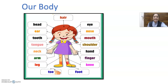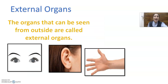Hum inki head se bohat saray kaam karte hai. So children, in this picture you can see so many organs of our body. The organs or body parts which can be seen from outside are called external organs. Body parts which we can see from outside — eyes, nose, ears, hands, legs, etc. — these types of organs are called external organs.